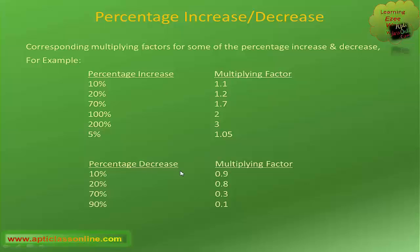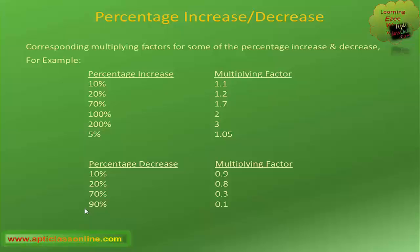For percentage decrease, say 10 percent decrease, the factor is 0.9. For 20 percent decrease, the factor is 0.8, because you get 1 minus 20 divided by 100, that means 1 minus 0.2, that is 0.8. For 70 percent decrease, it is 1 minus 0.7, that is 0.3. Similarly, for 90 percent decrease, the multiplying factor will be 1 minus 0.9, that is 0.1.